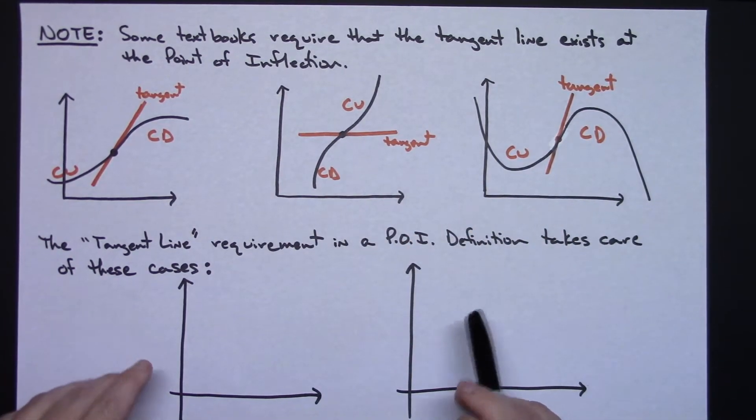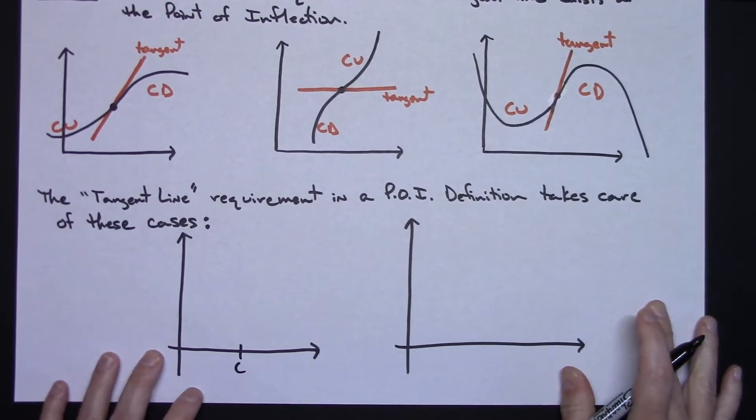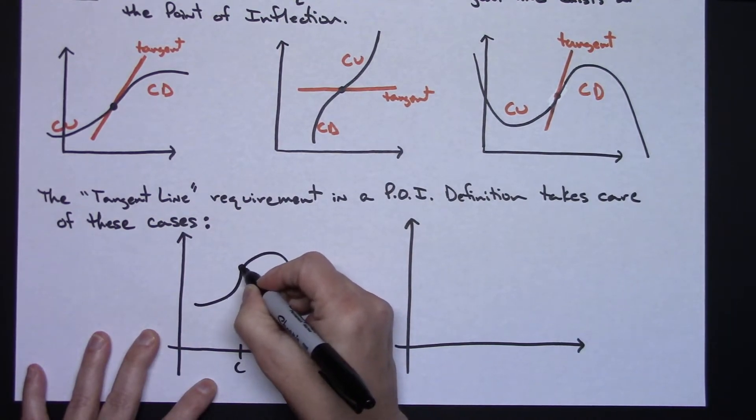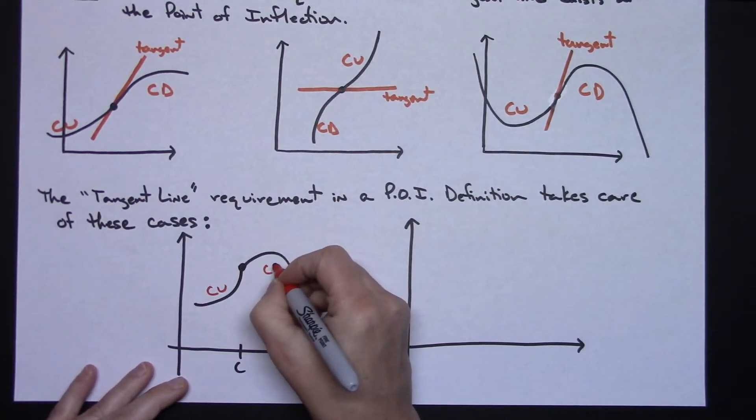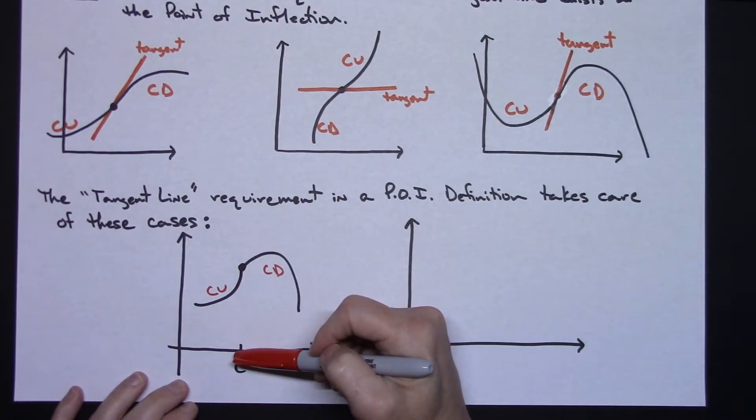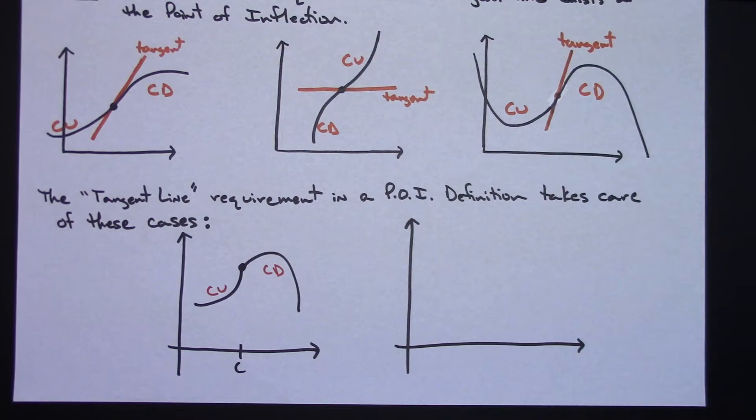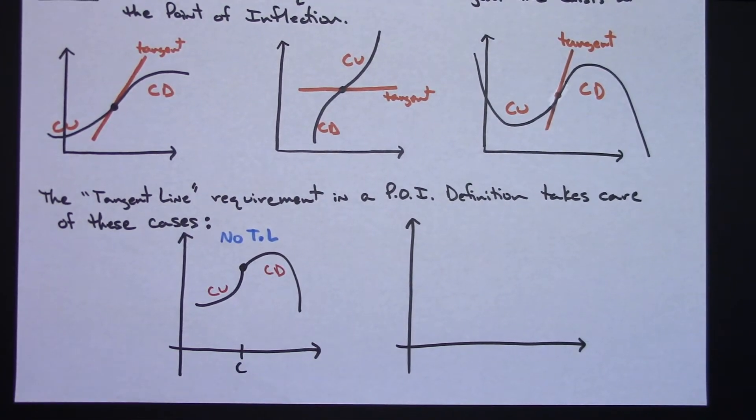Now, the tangent line requirement in that point of inflection definition takes care of a couple particular scenarios, and I'm going to draw those out right here. Let's suppose we've got some point C on our curve somewhere, and let's suppose our graph kind of look like this, maybe, with a distinct little cusp thing going on right there. Well, I've got concave up here. I've got concave down here. But right here, I have no tangent line. I can't draw a tangent line there at that cusp. So no tangent line means no point of inflection. So C is not a point of inflection. From that scenario, C is not a point of inflection because I can't get a tangent line drawn.